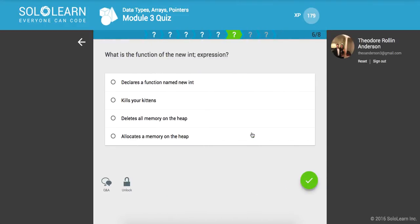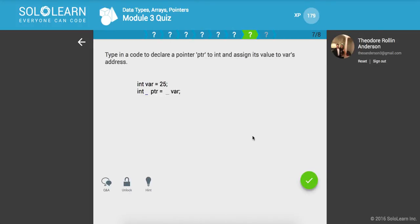What is the function of the new integer expression? If you remember from previous lessons, what this does is it allocates memory on the heap. And that's the dynamic memory that you have to deallocate later on.